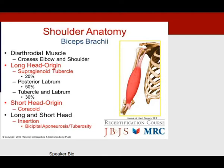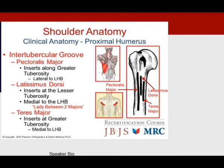The biceps has two heads: the long head originates from the posterior labrum and supraglenoid tubercle, while the short head originates on the coracoid, both converging at the bicipital tuberosity. During open proximal humerus surgery, remember that the latissimus dorsi — the lady between two majors — is medial to the long head of the biceps, while the pec major inserts lateral and the teres major inserts medial to the long head of the biceps.